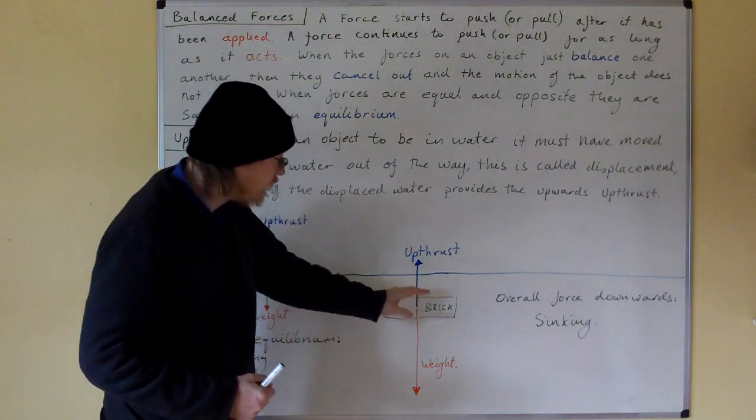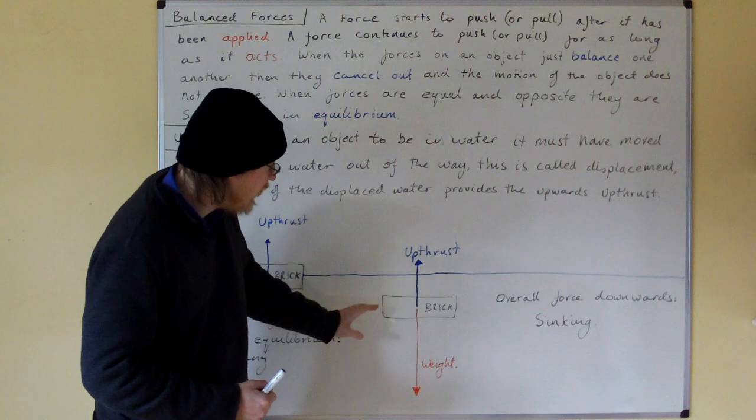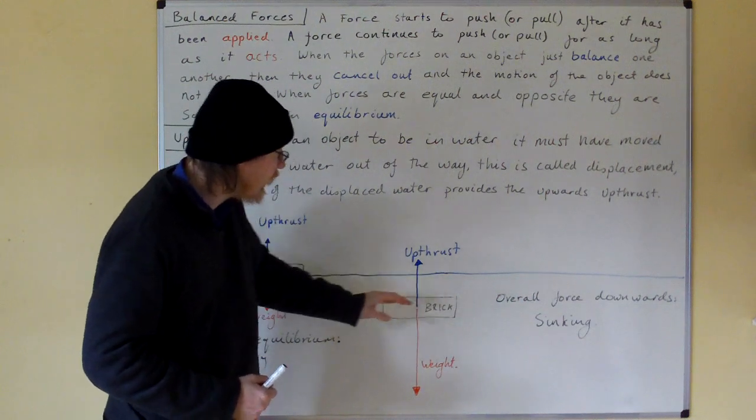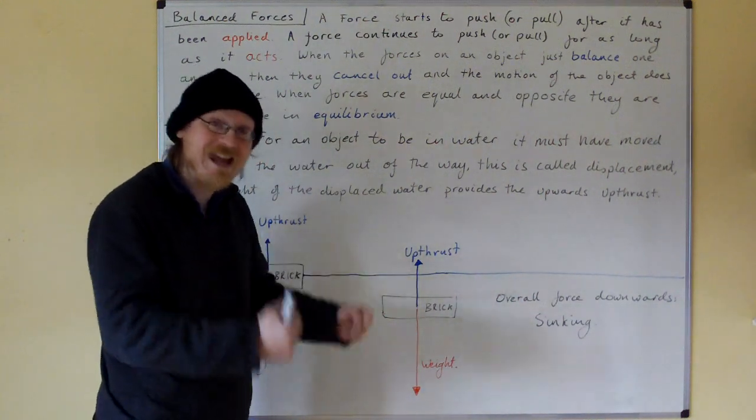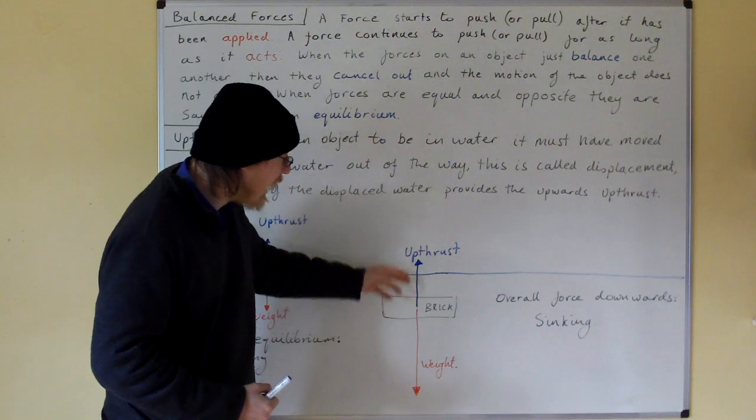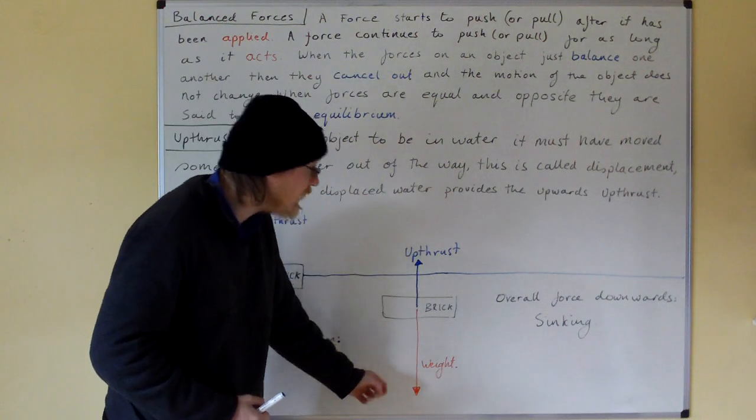Here we have just a conventional brick. It's displaced all of this water. But because the brick is denser than the water, the upthrust is less than the weight. So there's an overall force downwards and the brick is sinking.